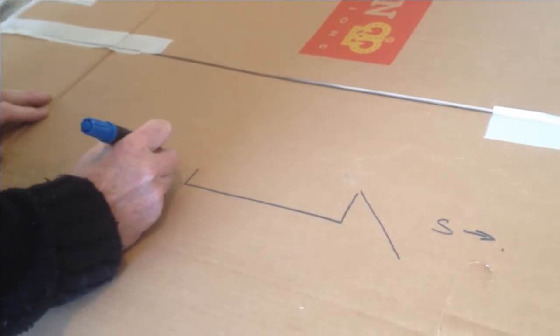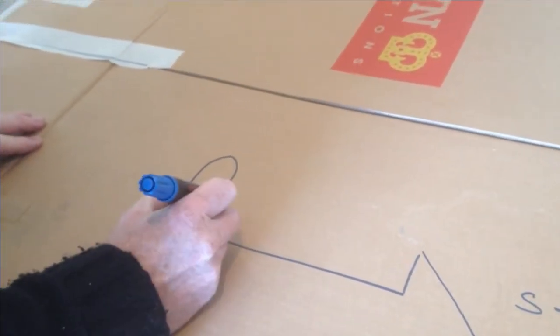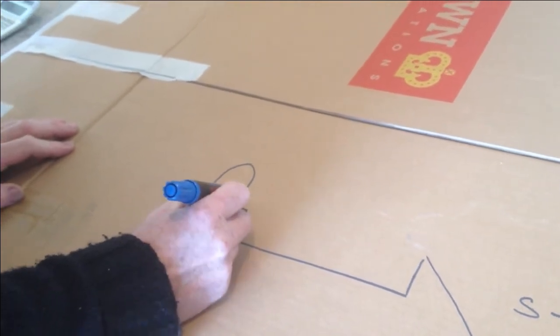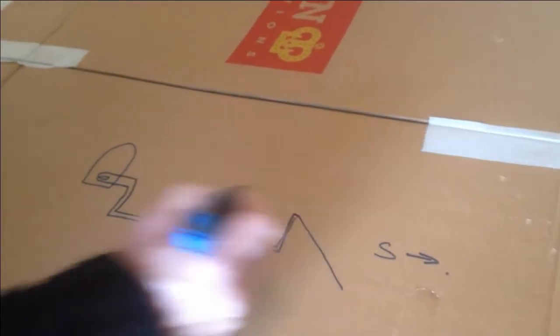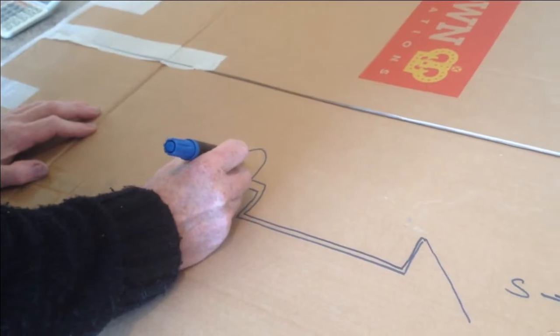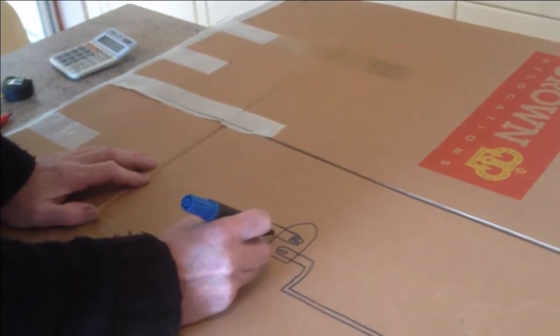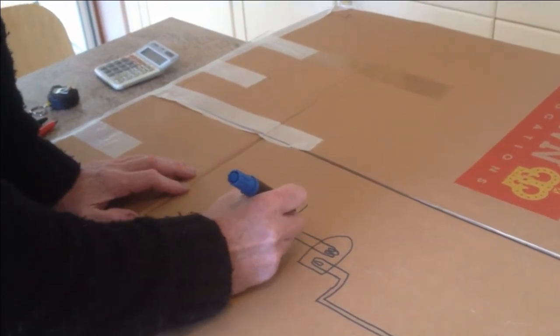In the airing cupboard we have our twin coil hot water cylinder. Bottom coil is connected to our solar panel like so. We have another coil in the top of the cylinder which is connected to normal condensing boiler.